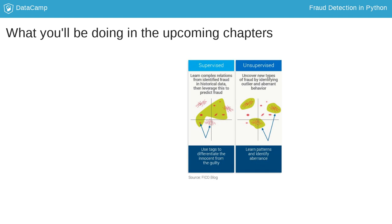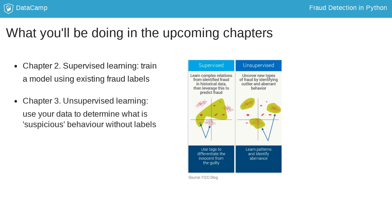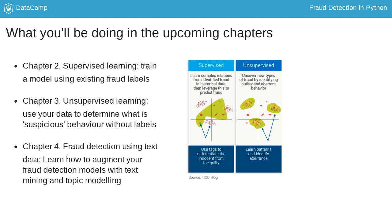In the following chapter, you'll learn how to adapt classification models to effectively detect fraud cases. In chapter 3, you'll explore the situation where there are no reliable labels and you need to flag potential fraudsters by clustering your data. Lastly, in chapter 4, you'll learn how to further improve your models by analyzing text data and applying topic modeling to further detect fraud.